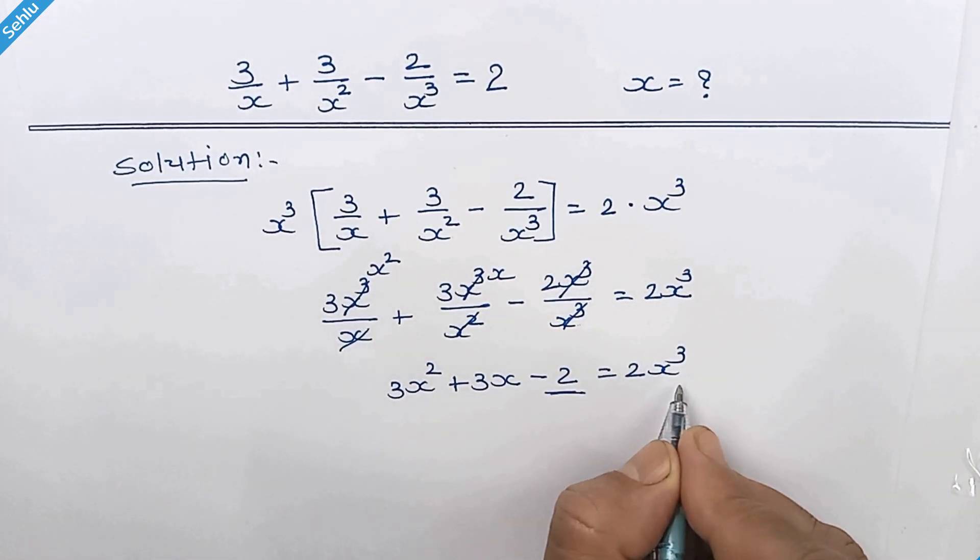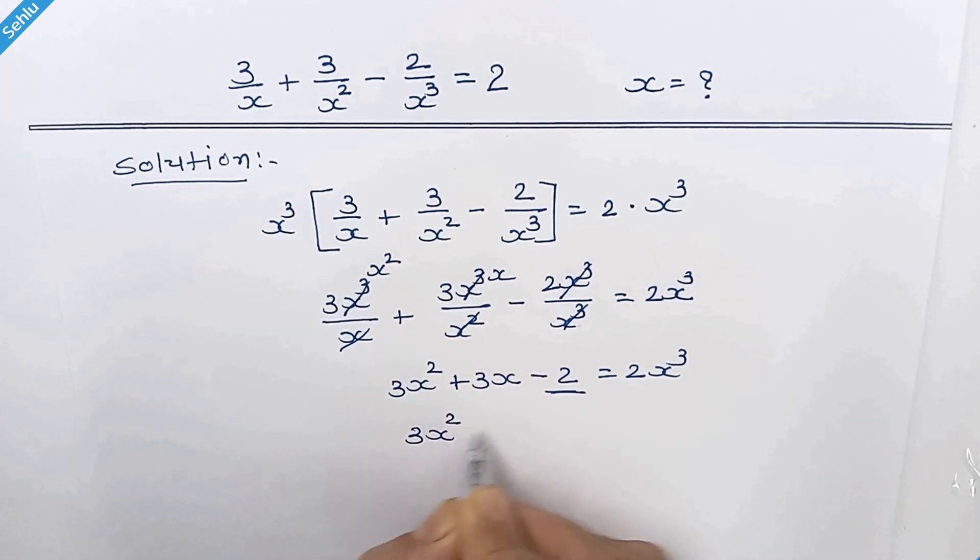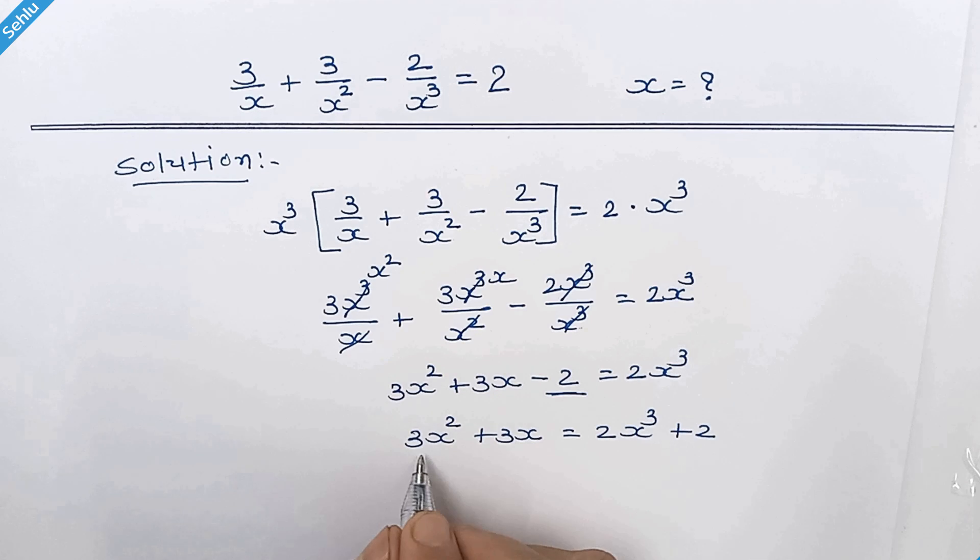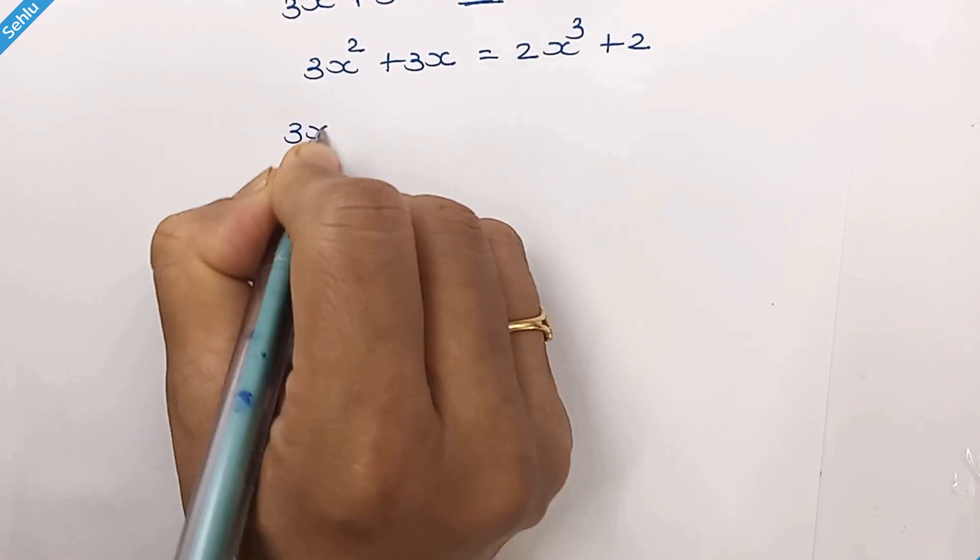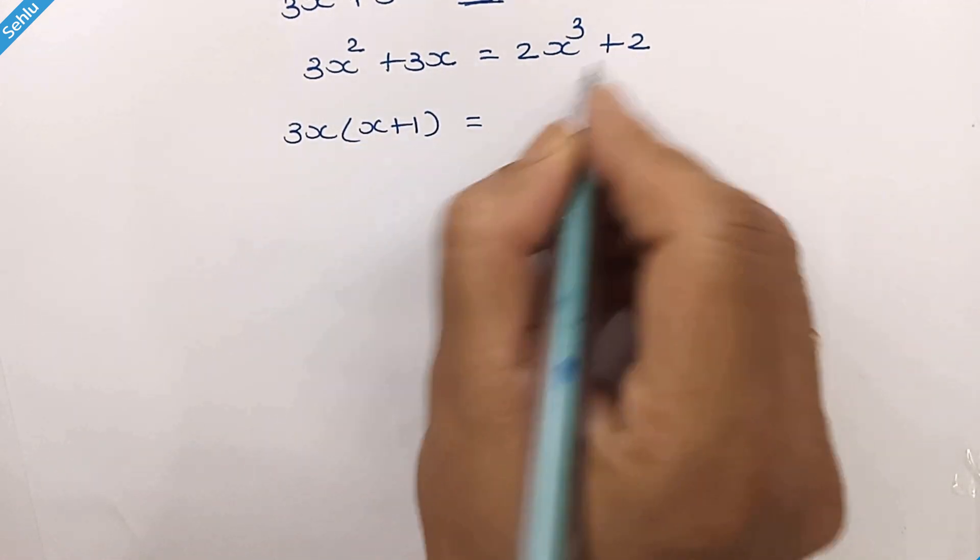Move these two here on right hand side. Factor out 3x from here.